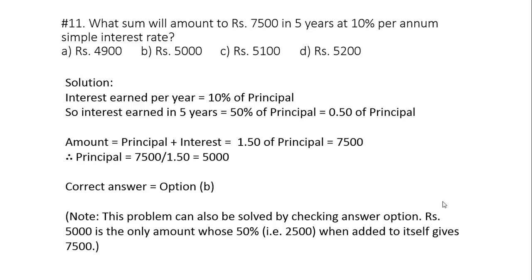Well, this question can easily be solved by checking the answer options. If you look at option number B, 5000, it is the only option whose half, that is 2500, when added back to 5000, will produce the required amount 7500. None of the other options will satisfy this condition. Hence the correct option is option B.